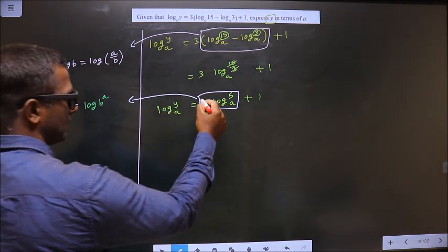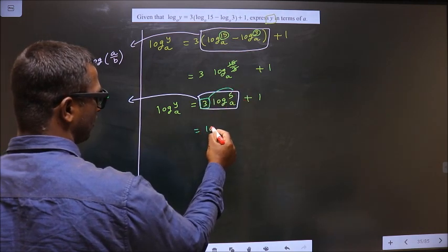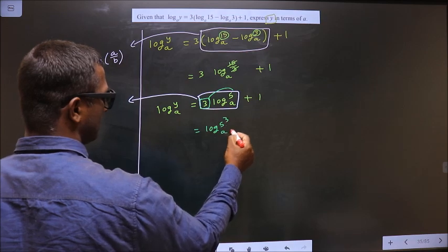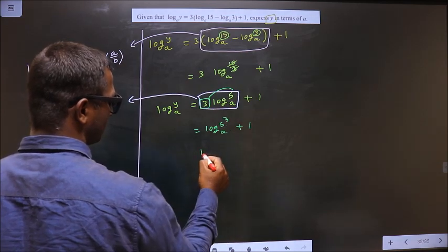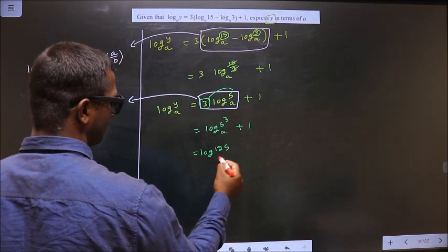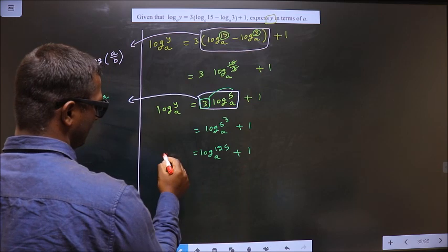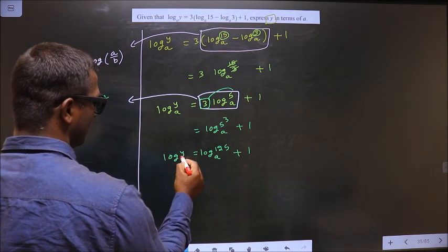So here the number is 3, it will go as the power, making it log 5 power 3 base a plus 1. That is log 125 base a plus 1. Here it is log y base a.